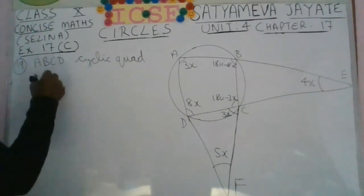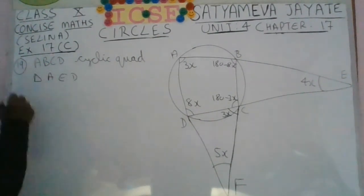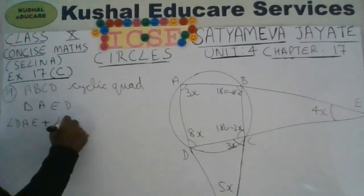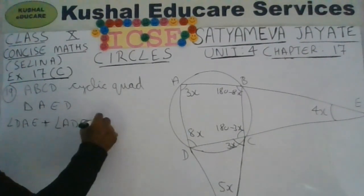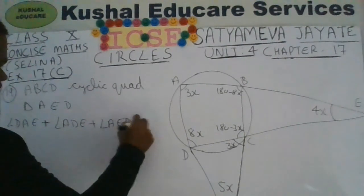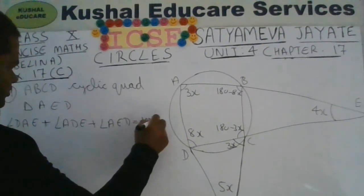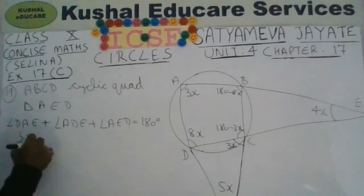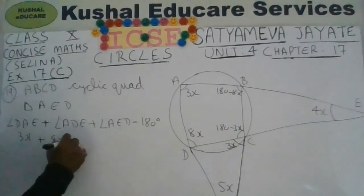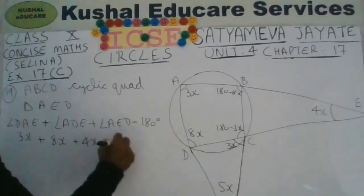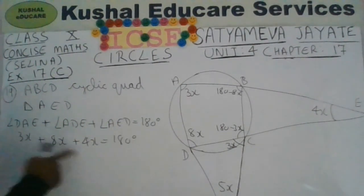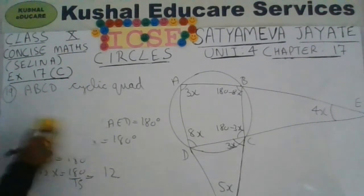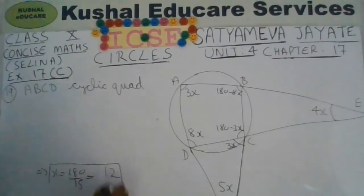In triangle AED, all three interior angles are known in terms of x: angle DAE equals 3x, angle ADE equals 8x, and angle AED equals 4x. Their sum equals 180 degrees, giving 3x plus 8x plus 4x equals 180 degrees, that is 15x equals 180 degrees, so x equals 12.